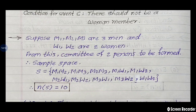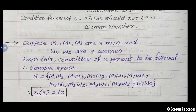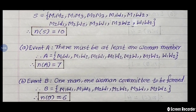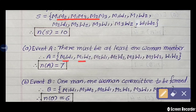Total 10 committees are formed. Now event A: at least one woman member is required in the committee, meaning minimum one woman — and more than one woman is also acceptable. The first three sample points have no woman, so we leave those. In the remaining sample points, at least one woman is present. So event A equals {M1-W1, M1-W2, M2-W1, M2-W2, M3-W1, M3-W2, W1-W2}, and N of A is equal to 7.